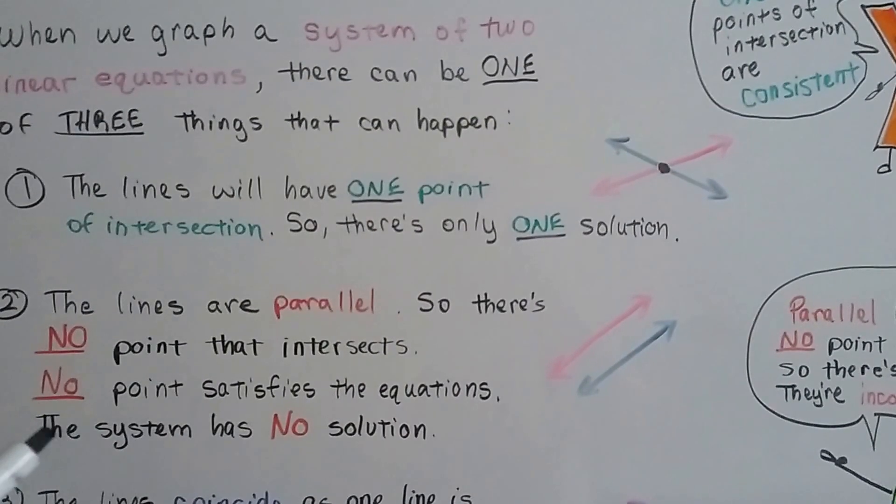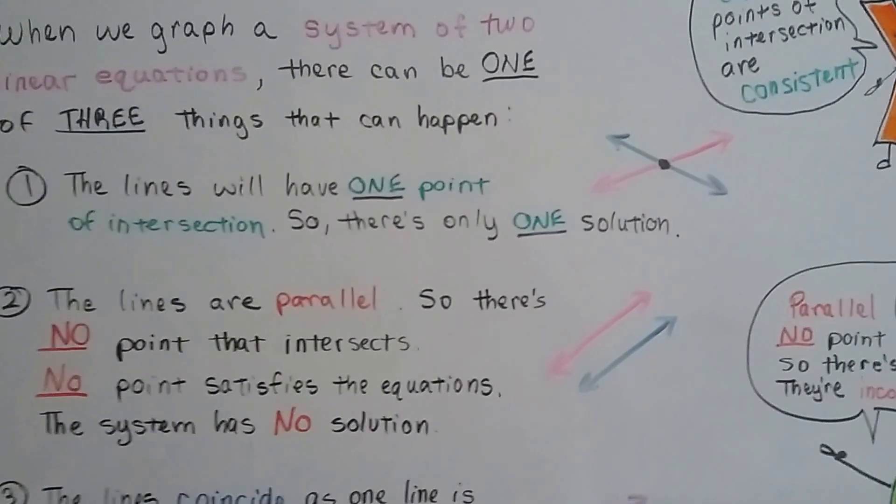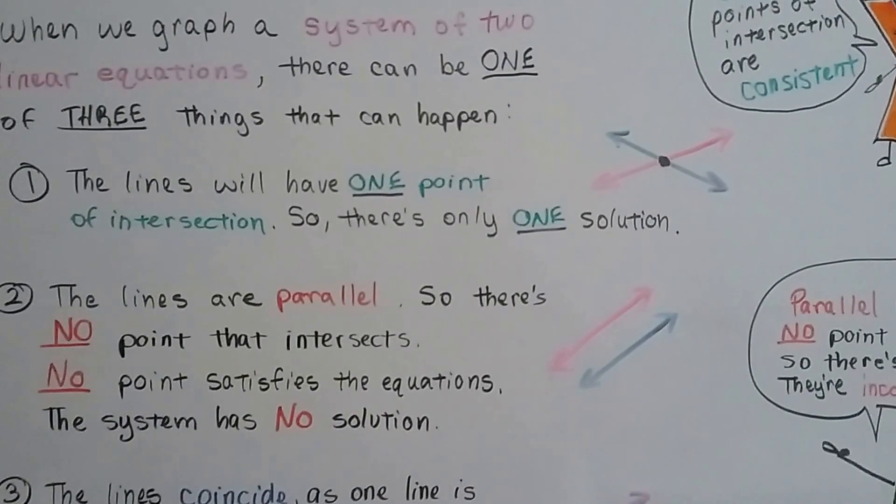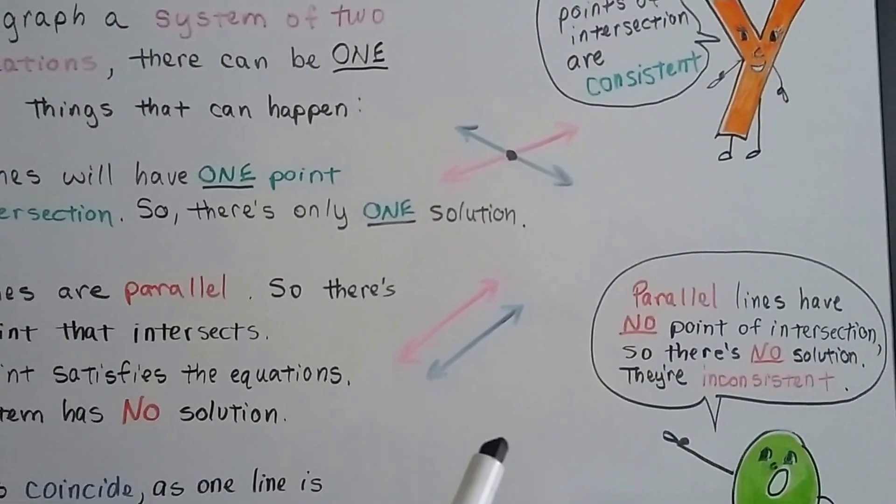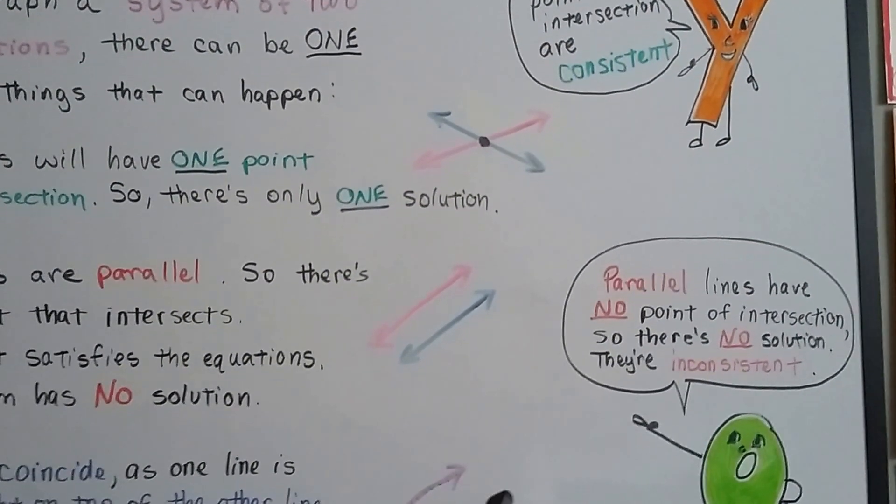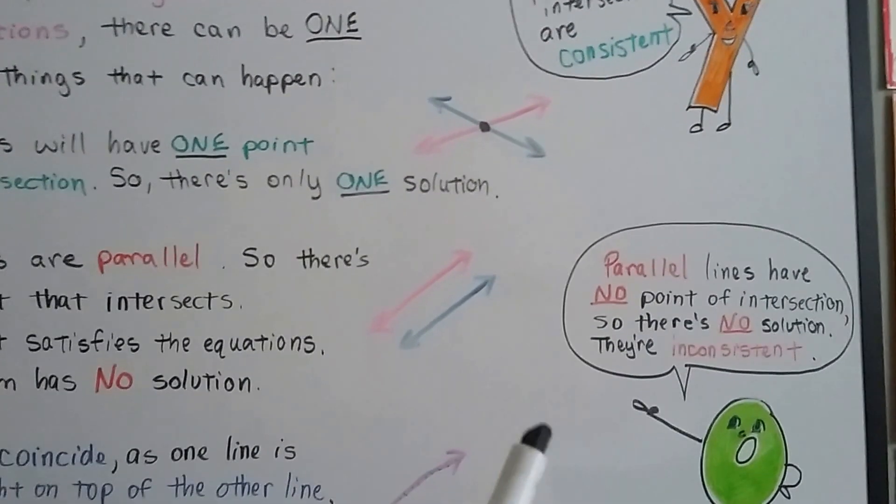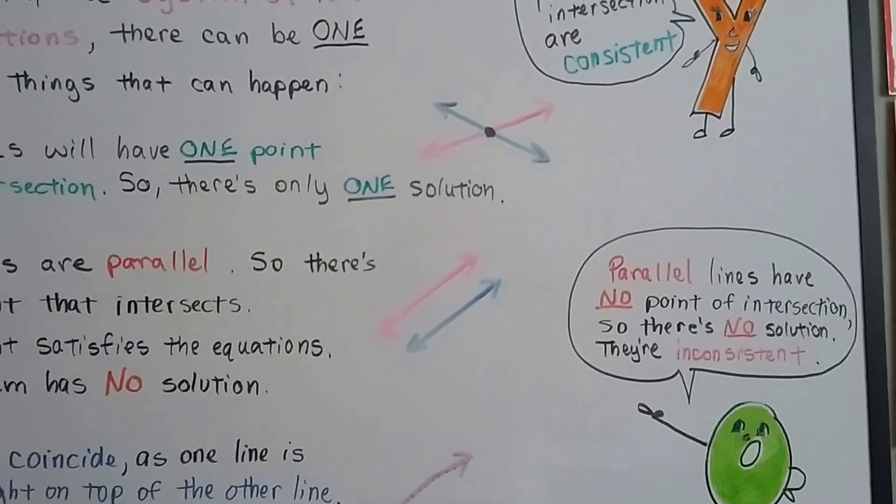Another possibility is that the lines are parallel, like this. So there's no point that intersects. No point satisfies the equation. The system has no solution. So parallel lines have no point of intersection. So there's no solution. And they're called inconsistent.